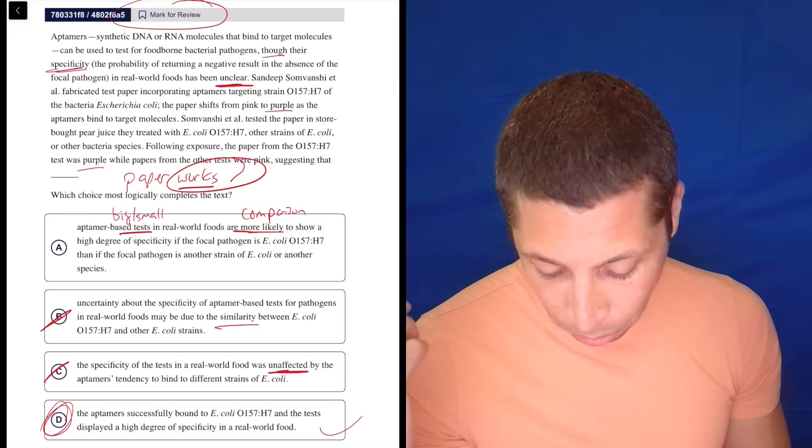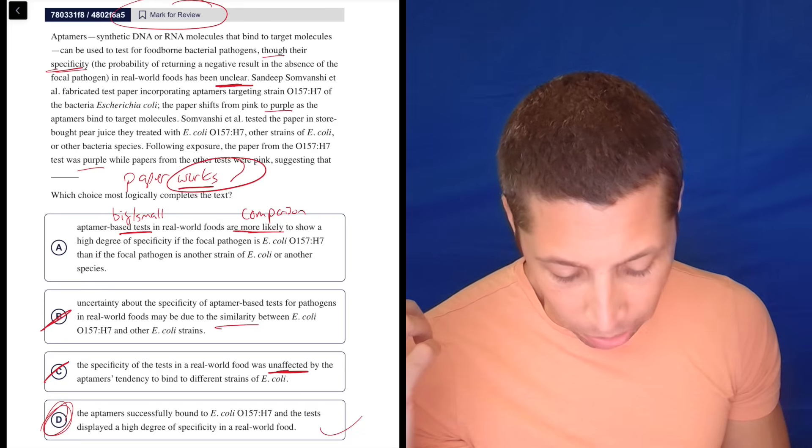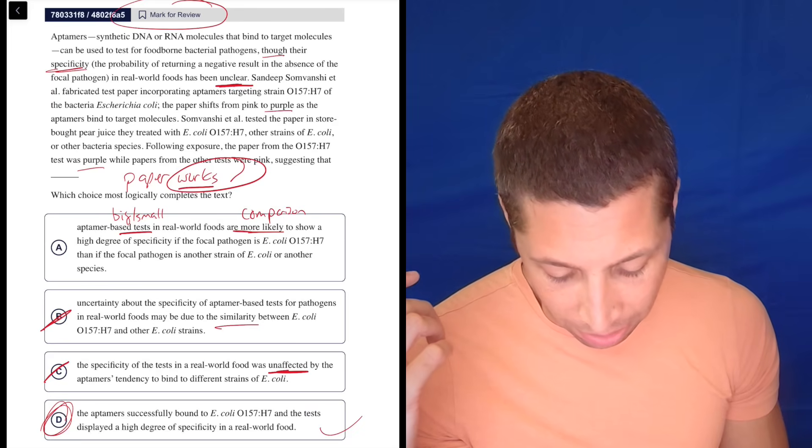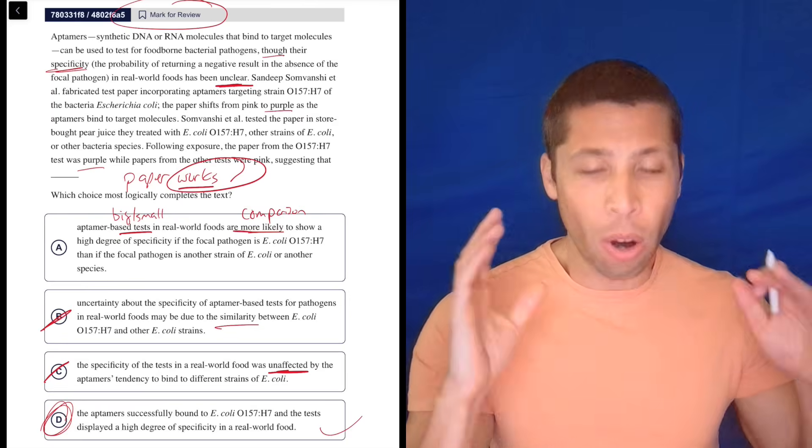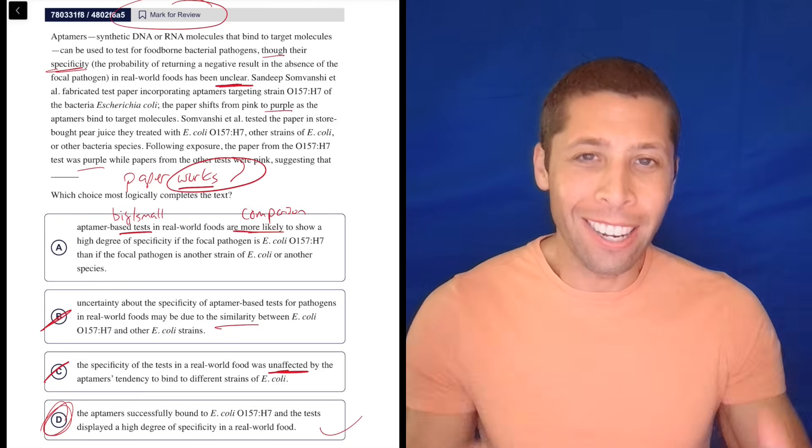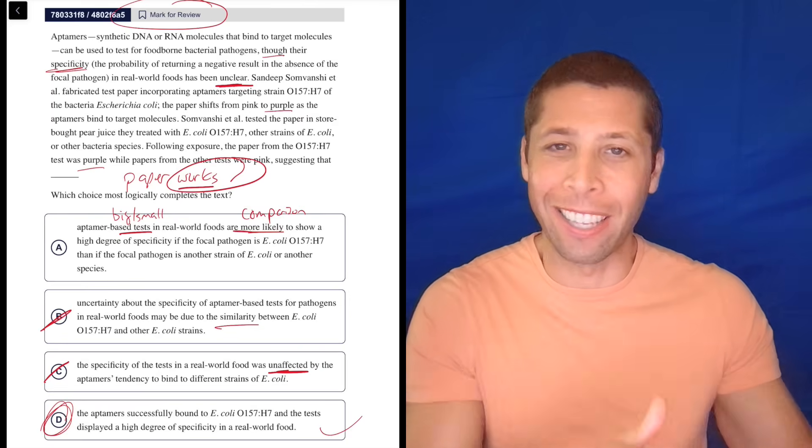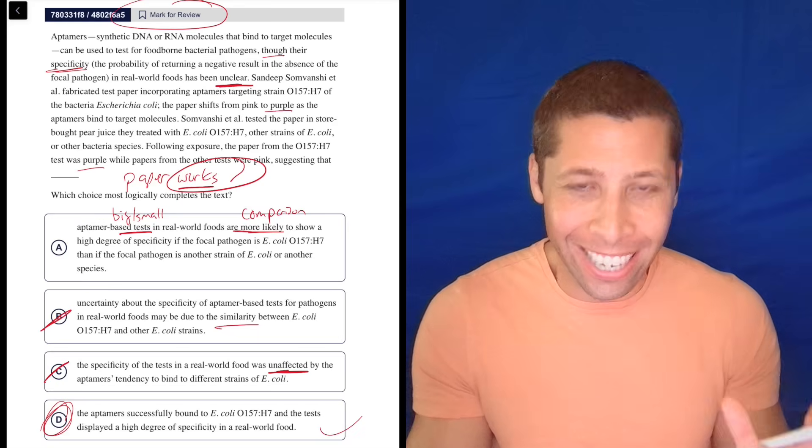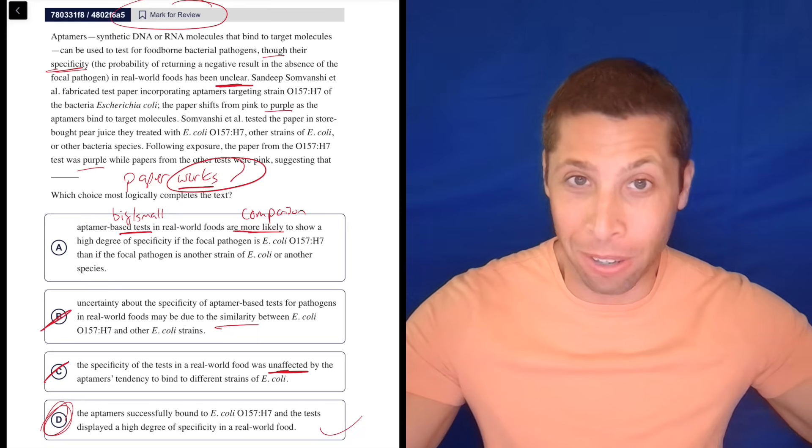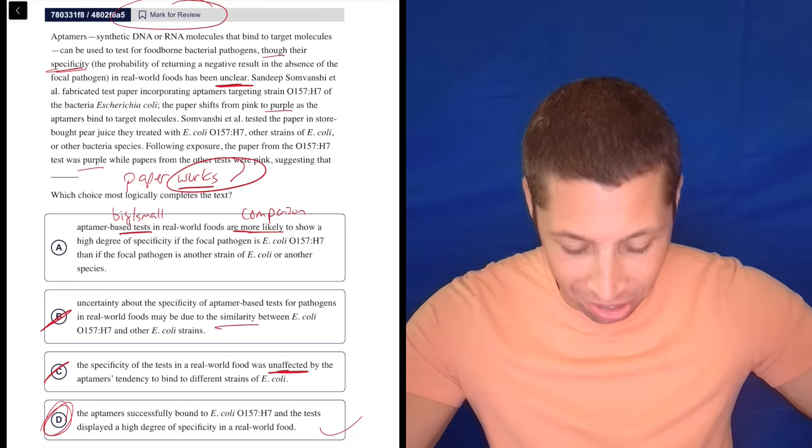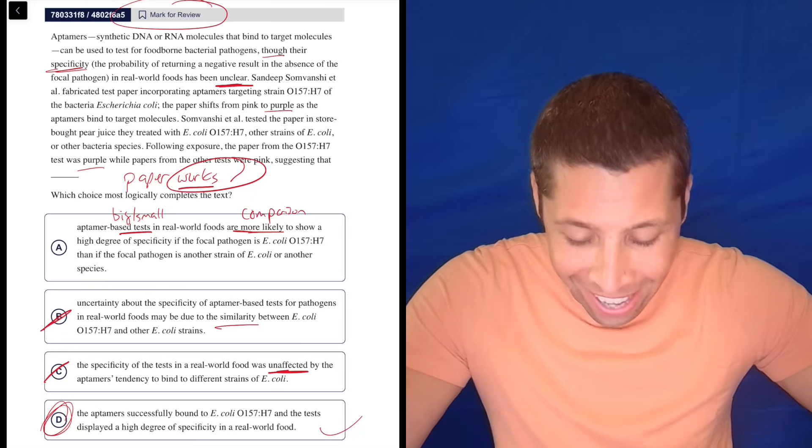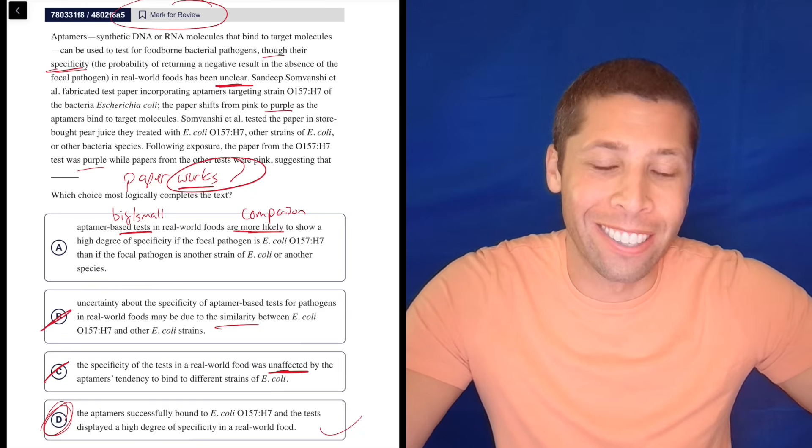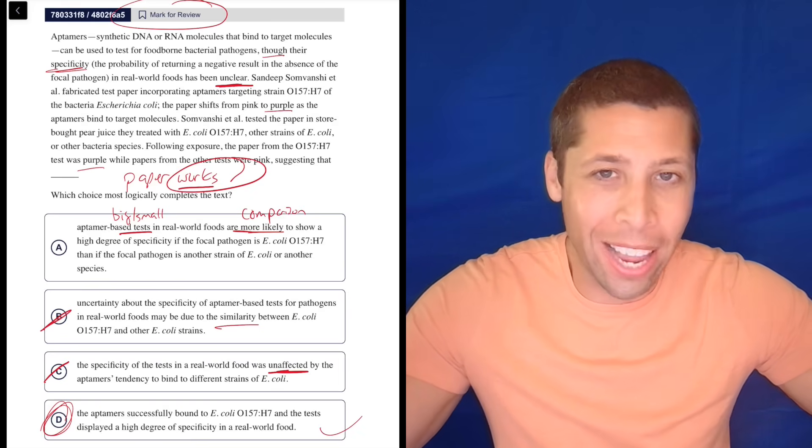If you're specifying that I want to test for E. coli O157, then you would only want E. coli O157 to show up as positive when you're testing it. You wouldn't want other strains of E. coli to show up as positive. So it sounds like it was unclear, but then this guy found a thing that worked. So is it not unclear anymore? I don't understand the problem here. A, again, let me just go back to it. Aptamer-based tests in real world foods are more likely to show a high degree of specificity in the focal pathogen. No, they're not comparing this. O157 is not special. It is just the one they happened to test in this particular experiment. That's it. It's not like some big, important strain of disease. It's just a random bacteria. We're not drawing broad conclusions because of this one thing, I guess.